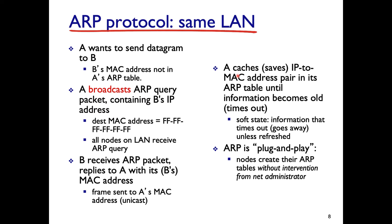When A receives the reply from B, it creates an entry in its ARP table or cache. This is plug-and-play — there is no human intervention, no manual entry, no manual process required. The table is built automatically by the protocol.